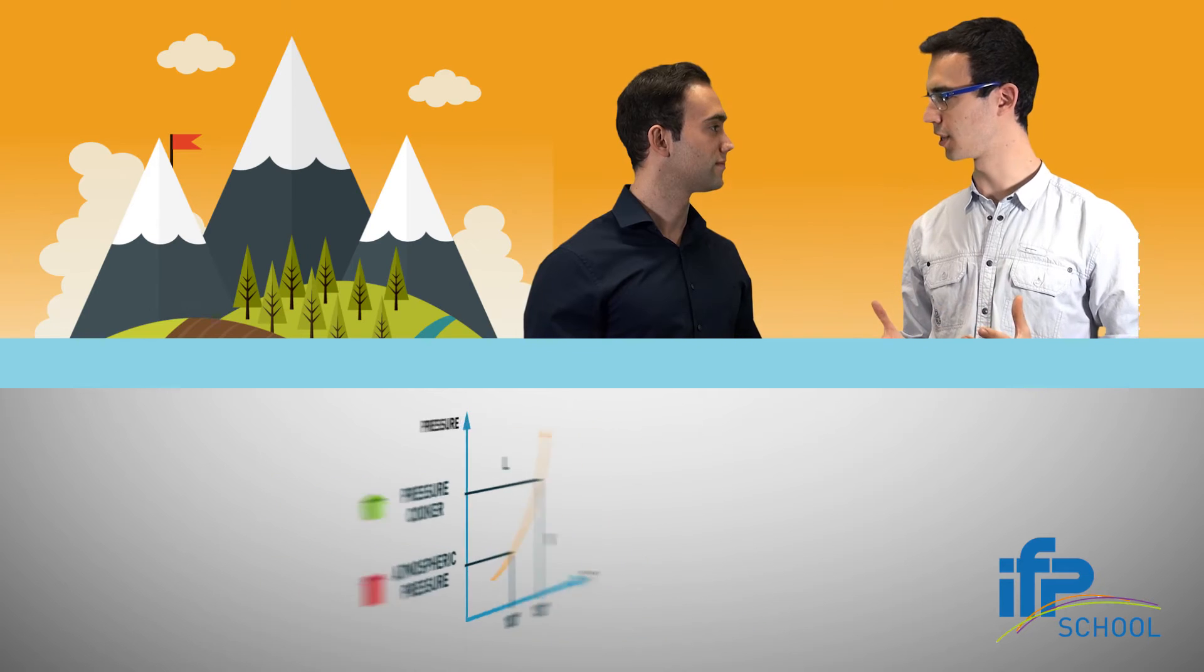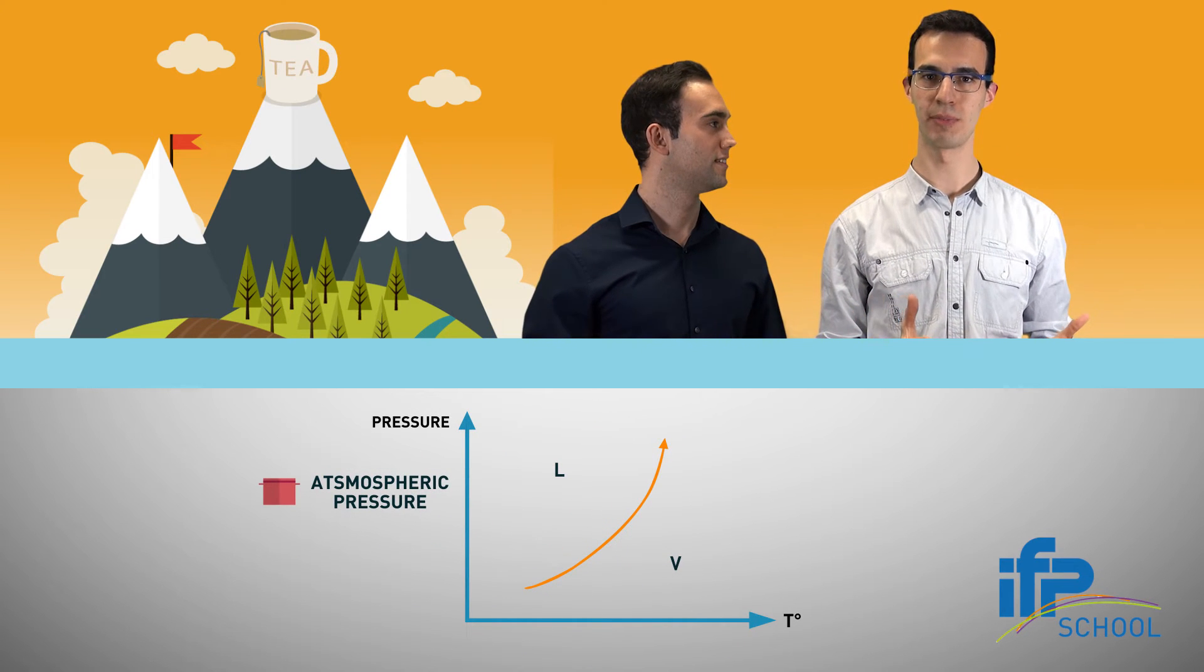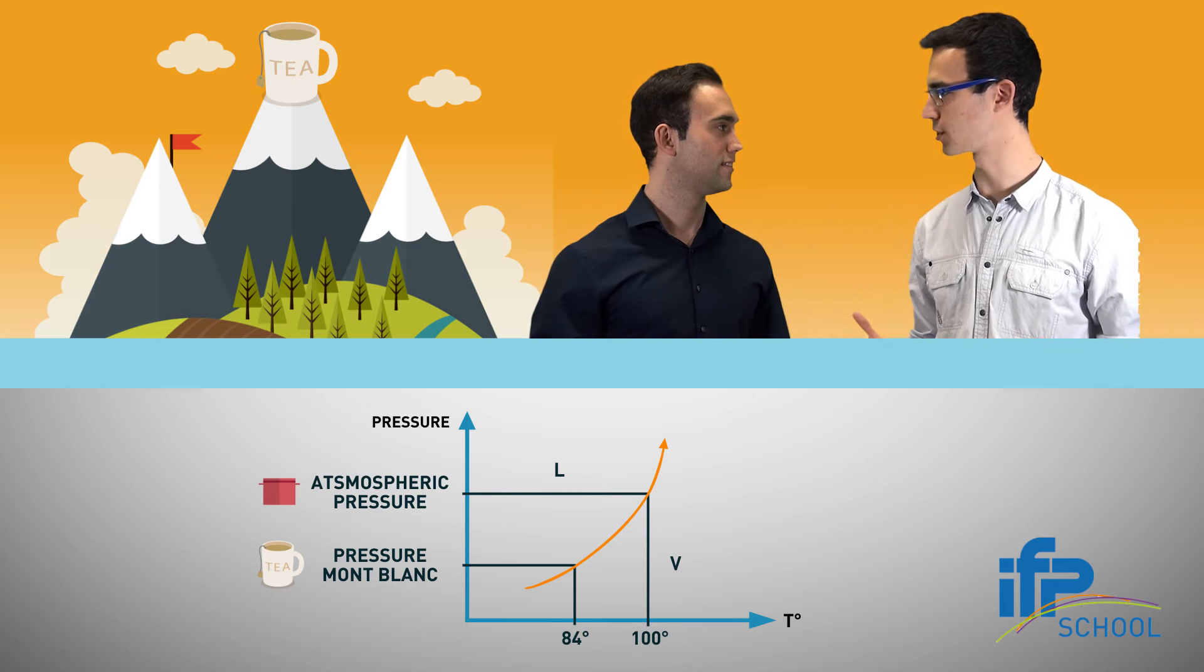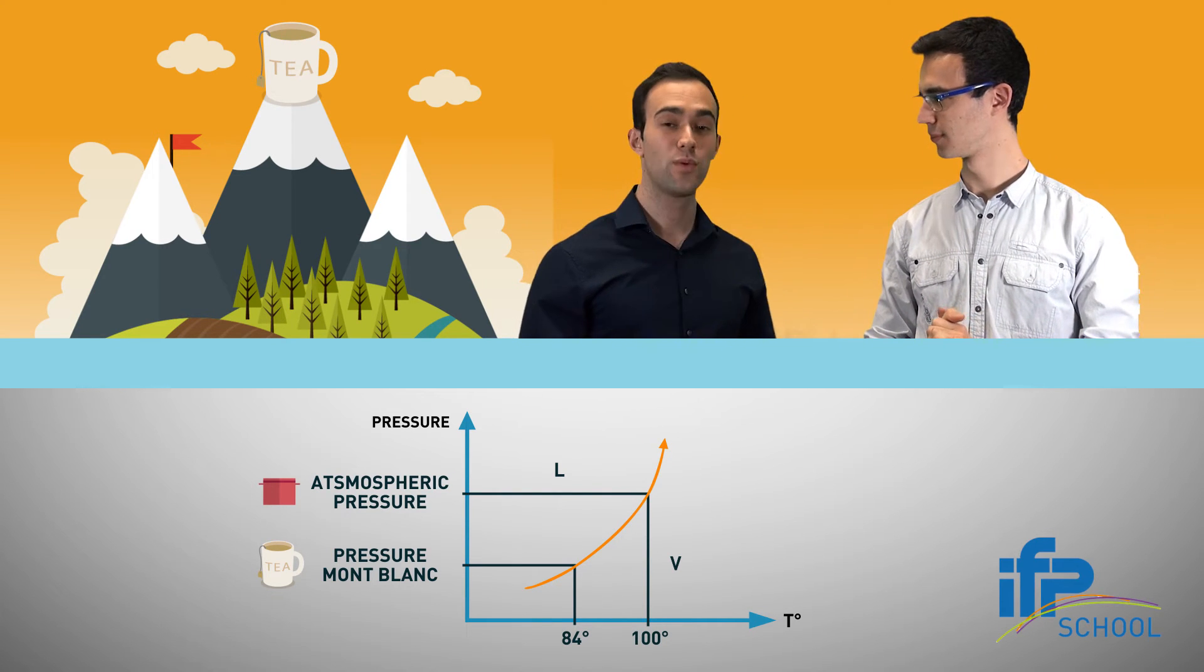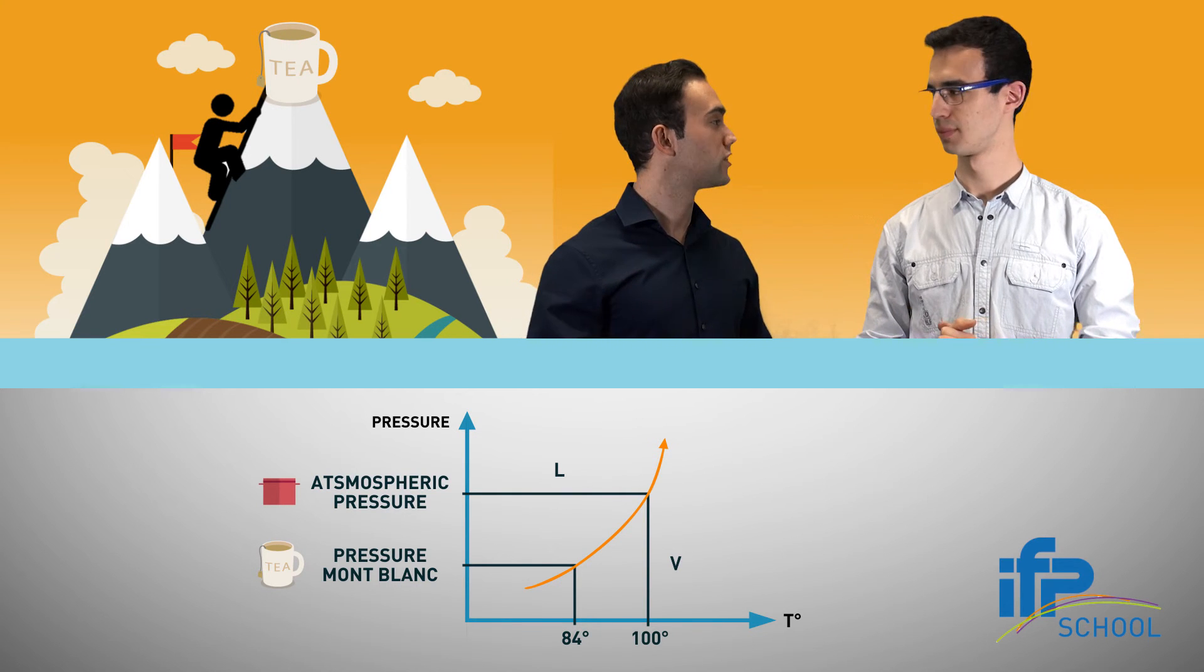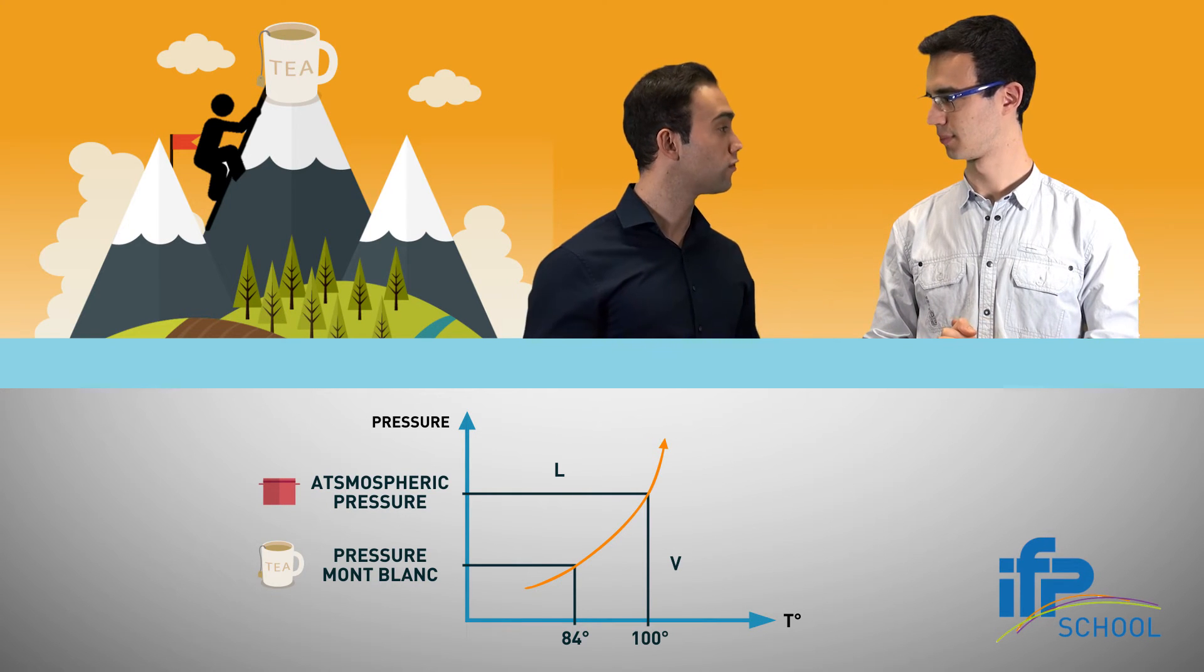Hmm, I think I got it. Then, for instance, if I want to prepare tea at Mont Blanc, will I need less temperature to boil the water? Voila, that is. As you may know, the higher we climb in a mountain, the lower the pressure, resulting in a lower boiling point of water.